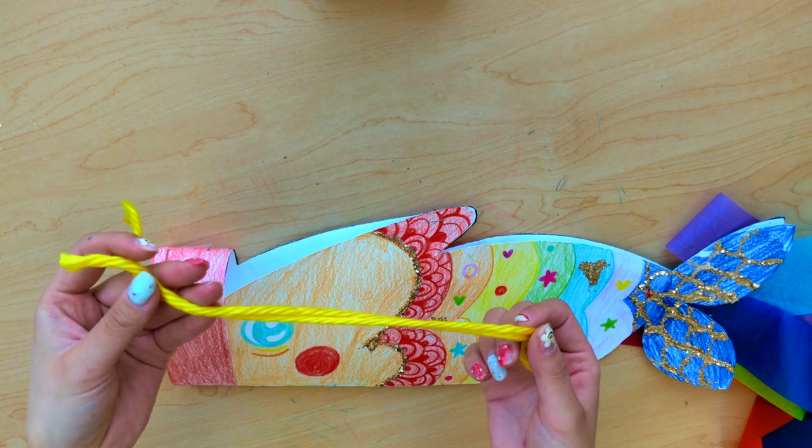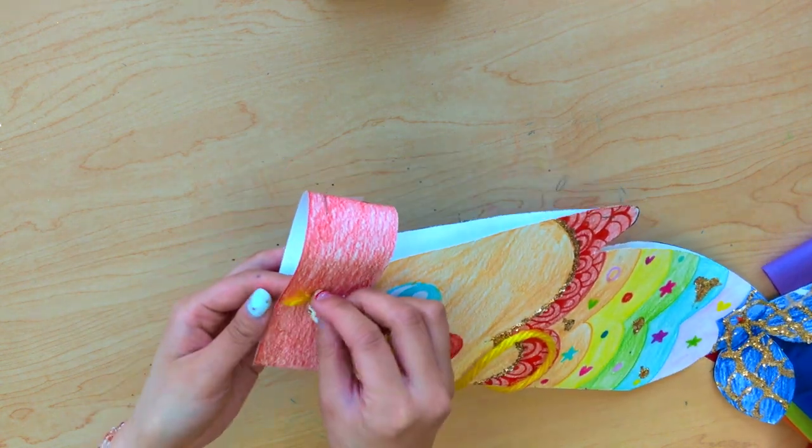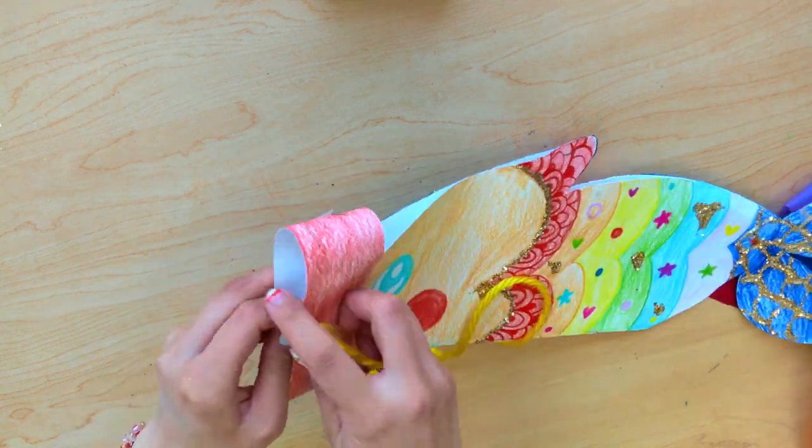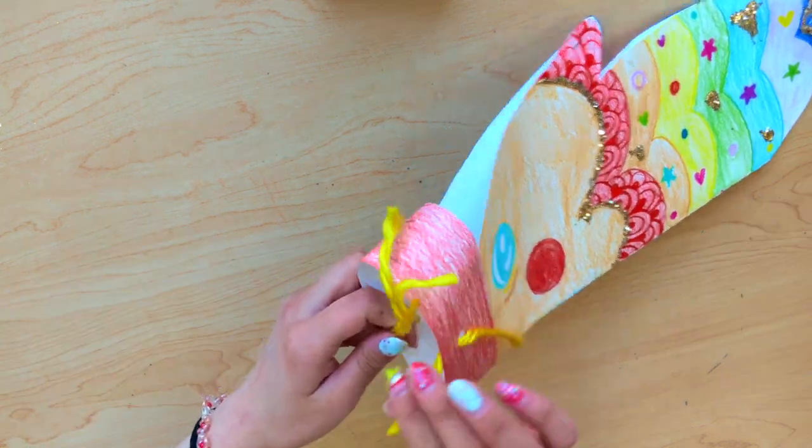I'm going to get my yarn and you may use any type of string you have. If you don't have string, you could use ribbon or even a rubber band. I'm going to put it through the hole and make sure both ends are inside of my fish's mouth. And then I'm just going to tie a knot to finish it off.